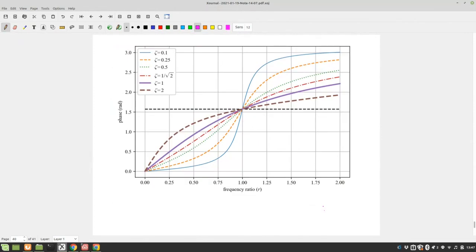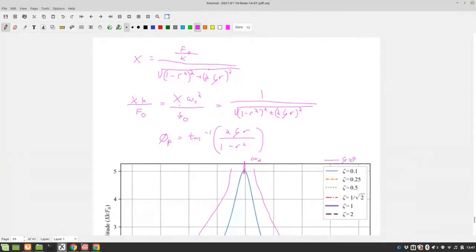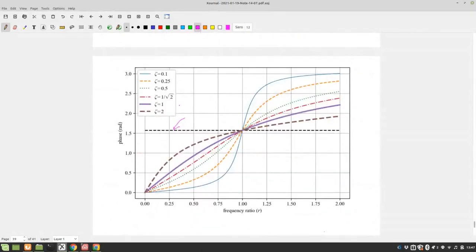So we have these phase plots. Note that the dash black line here is here for mathematical reasons, because if we look at this equation for phase. Actually, just let me rewrite this here. So φ_p = tan⁻¹(2ζr / (1 - r²)). We don't get a continuous plot. These will kind of come back down. And so we put this dash line here and we move everything up so we have a nice continuous plot.